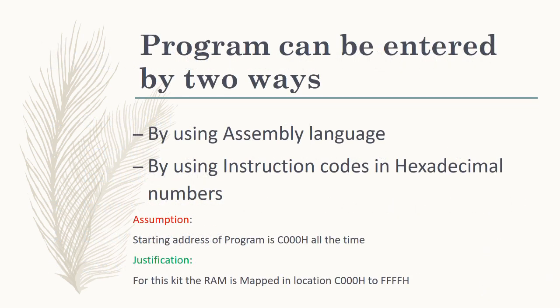The program can be entered by two methods. Using assembly language, we can easily type the instructions as we studied — for example, ADD B, which adds the contents of B to the accumulator. However, one drawback is that if there is a wrong entry and the kit hangs, after a reset you have to start typing from the first step again. So for large programs, it is better to use the second method.